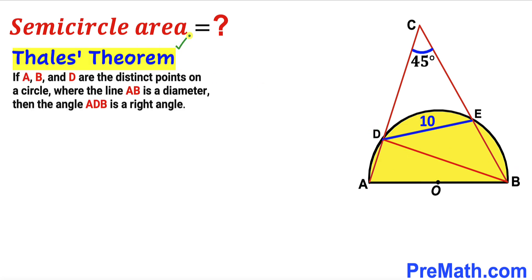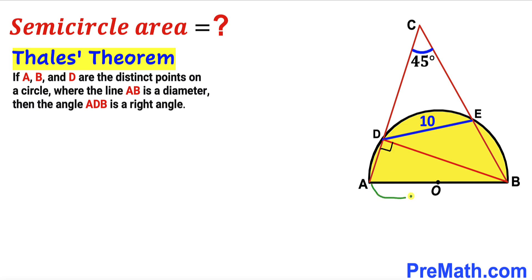Let's recall the Thales theorem. According to this theorem, if A, B, and D are three distinct points on the circle where the line AB is the diameter, then the angle ADB is a right angle — 90 degrees. In our given problem, we have these three distinct points A, B, and D on this semicircle, and AB is the diameter. So by Thales' theorem, angle ADB is 90 degrees, meaning triangle ADB is a right triangle.